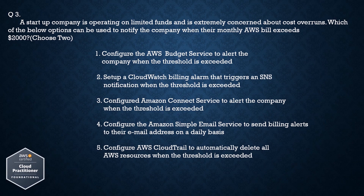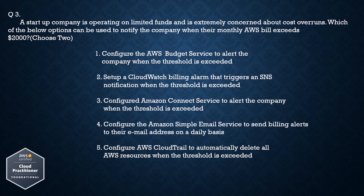Option 1: Configure the AWS Budget service to alert the company when the threshold is exceeded. Option 2: Set up a CloudWatch billing alarm that triggers an SNS notification when the threshold is exceeded. Option 3: Configure the Amazon Connect service to alert the company when the threshold is exceeded. Option 4: Configure Amazon Simple Email Service to send billing alerts to their email address on a daily basis. Option 5: Configure AWS CloudTrail to automatically delete all AWS resources when the threshold is exceeded.